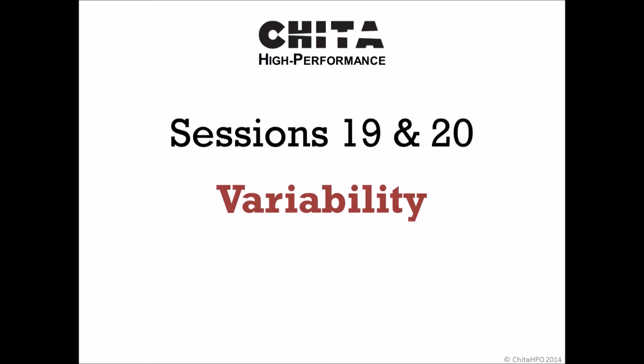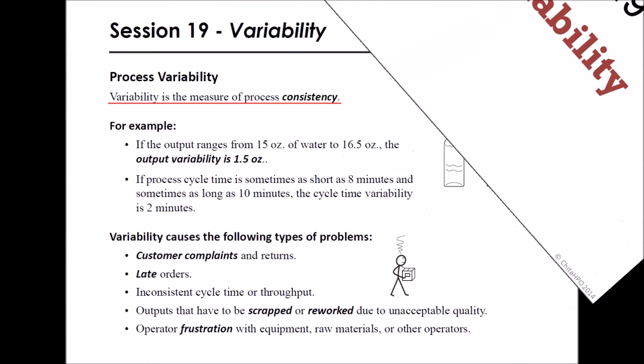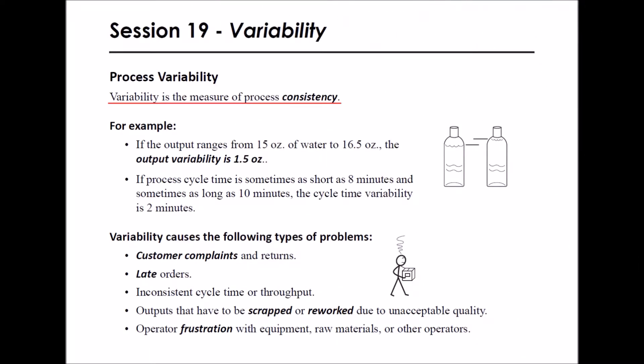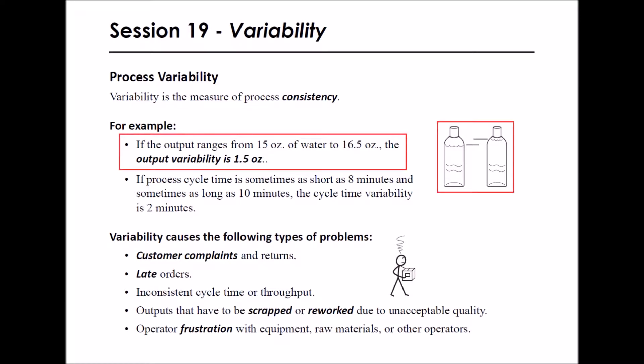Sessions 19 and 20: Variability. Variability is the measure of process consistency. For example, if the output ranges from 15 ounces of water to 16.5 ounces, the output variability is 1.5 ounces.